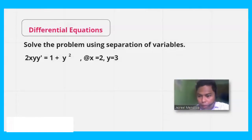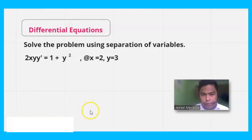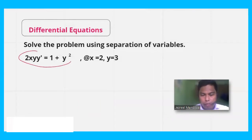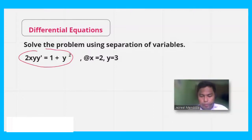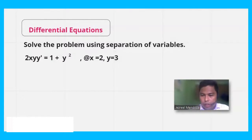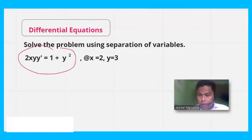Hello, let's solve this problem using separation of variables. Our problem is 2xy·y' = 1 + y², with the condition that x = 2 and y = 3. On this problem, we can arrive at a general solution.